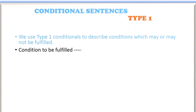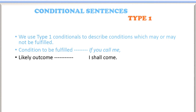We use type 1 conditionals to describe conditions which may or may not be fulfilled. So there is possibility and there is less possibility as well — condition to be fulfilled. For example: if you call me — that is the condition to be fulfilled — I shall come, which is the likely outcome. So there is a possibility: if you call me, I shall come.